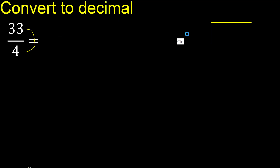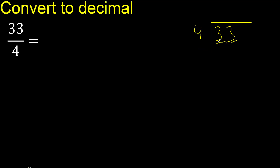33 divided by 4. 3 is less than 4, so we move to 33. 33 is not less than 4. Now, 4 multiplied by which number is nearest to 33 but not greater? 4 multiplied by 9 is 36 — 36 is greater, so that's too big.